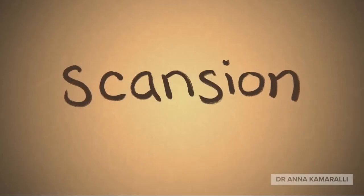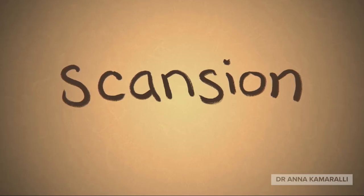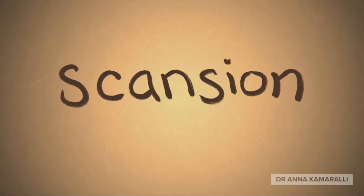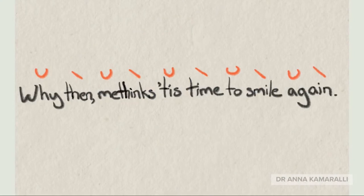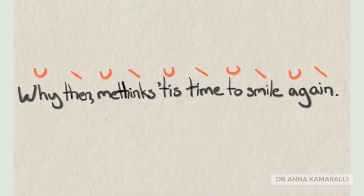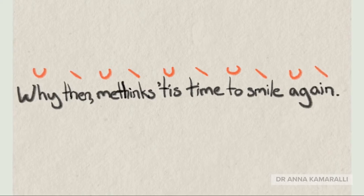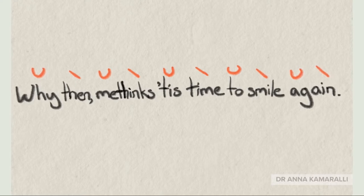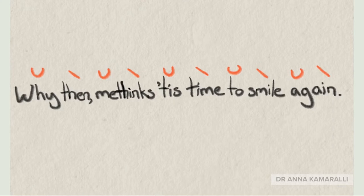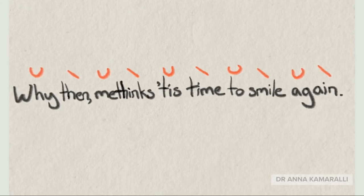What I'm going to do now is demonstrate the process of figuring out the scansion of a line — working out which beats are light and which are heavy — so that at the end of that we can say the line in such a way that we can figure out what matters in it. Remember, what we're looking for as a standard, as a default, is that there are going to be 10 syllables in the line, and five of those, every second one in most cases, is going to be a heavy beat. So that light-heavy, light-heavy pattern that we call iambic is what we're going to be looking for, and along the way we're going to find some variations where that isn't what we get.